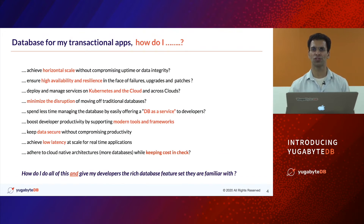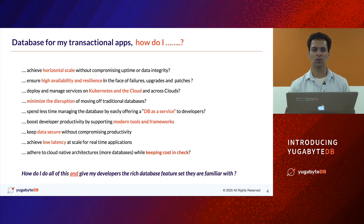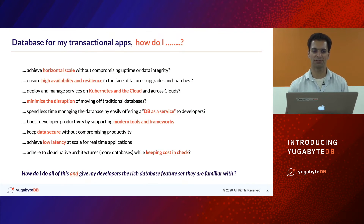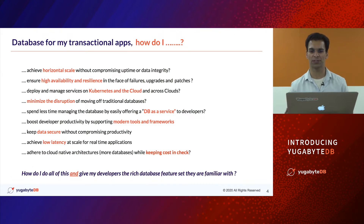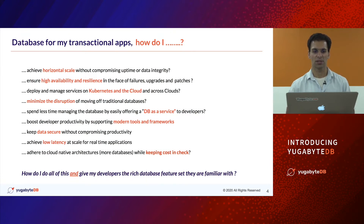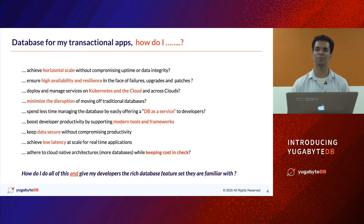The question then shifts to: how do I achieve horizontal scale without compromising my system of record in terms of uptime or integrity of data? How do I ensure high availability and resilience, whether I'm doing an upgrade, a patch, or there's an unplanned failure? How do I deploy and manage services on Kubernetes, bare metal, VM, in a public or private cloud? There could also be hybrid deployments that cut across these different clouds. How do I minimize disruption by not having my developers relearn a completely new API? How do I spend less time managing all of this so I can offer a database as a service internally to folks to get agility?